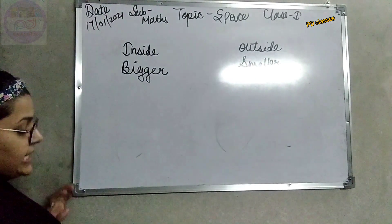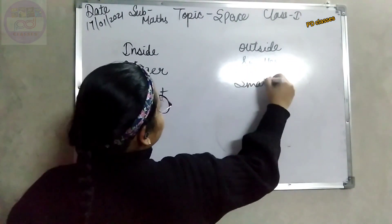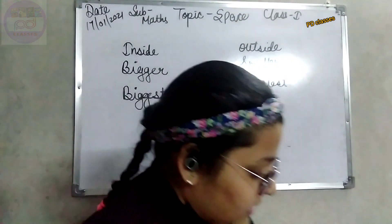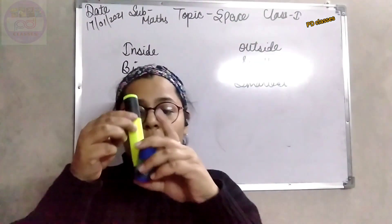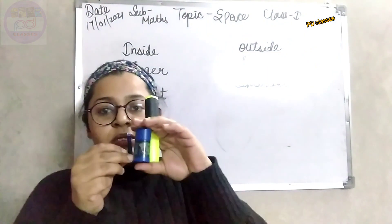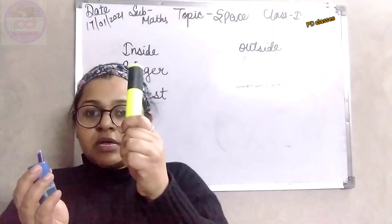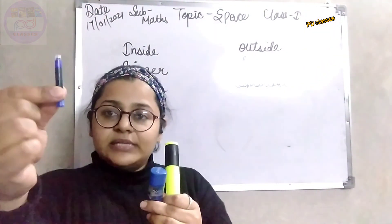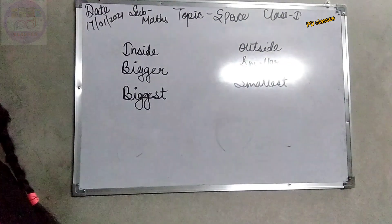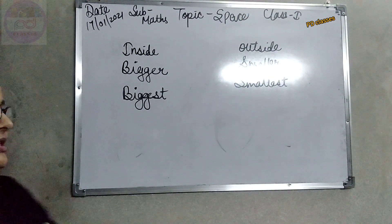Now let us learn the biggest and smallest. See how this is being compared. I have this top, I have this marker, and I have this refill. Which is the biggest one in these three? Obviously, this marker is the biggest one. And which is the smallest one? This refill — so this is the smallest. I am going to draw something and you have to answer which is the biggest one and which is the smallest one.